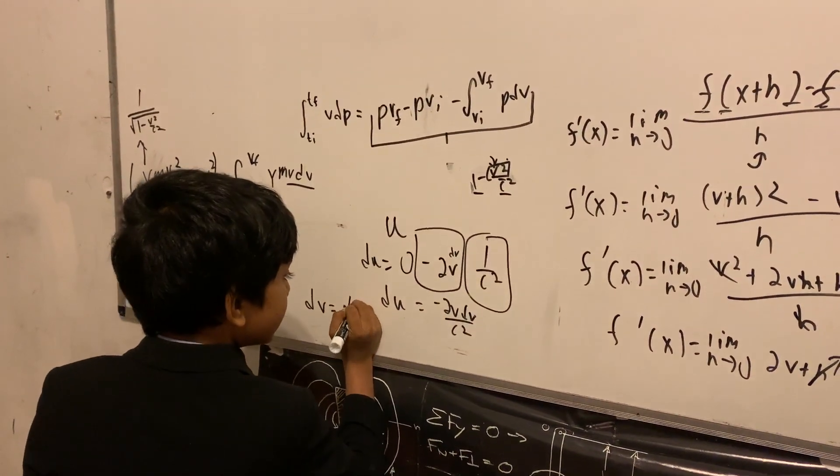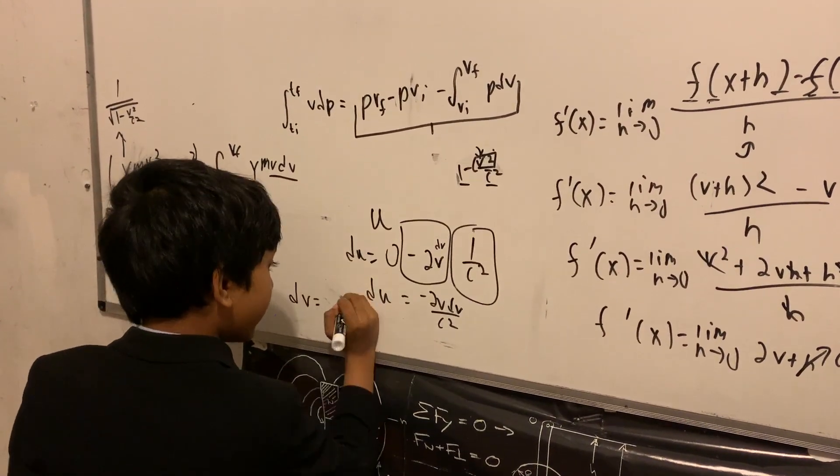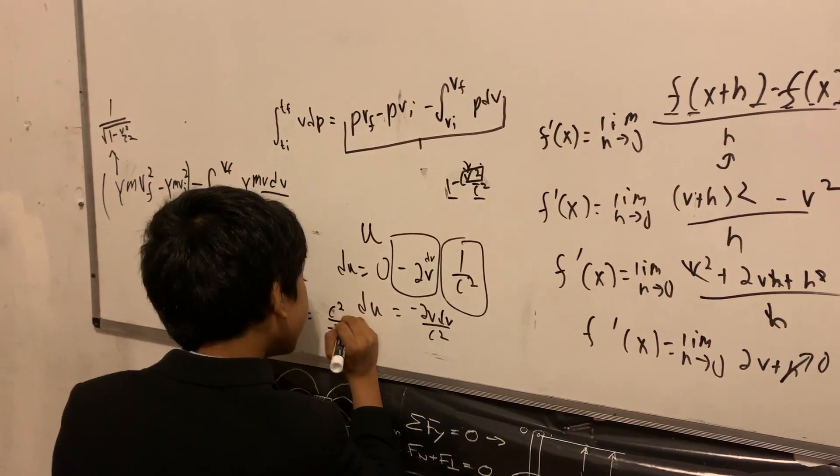which gives us dU C squared, or C squared, over minus 2V times dU.